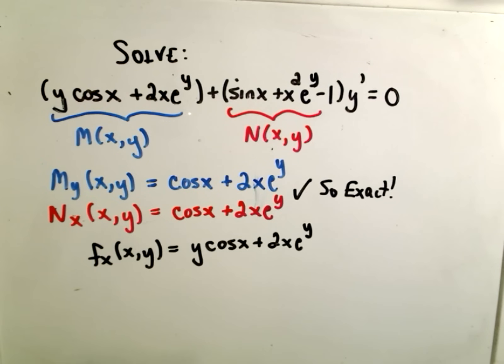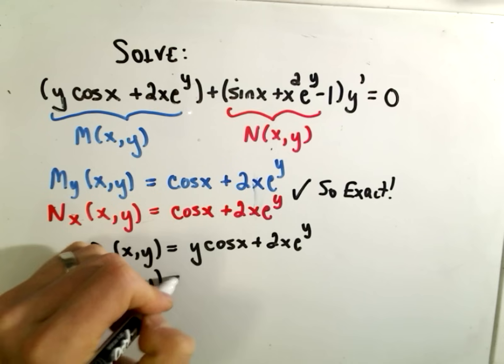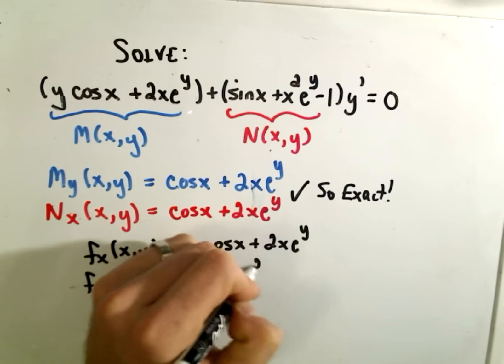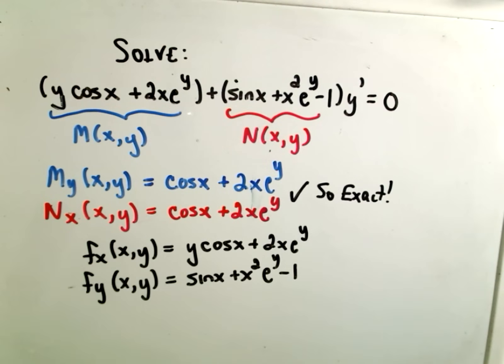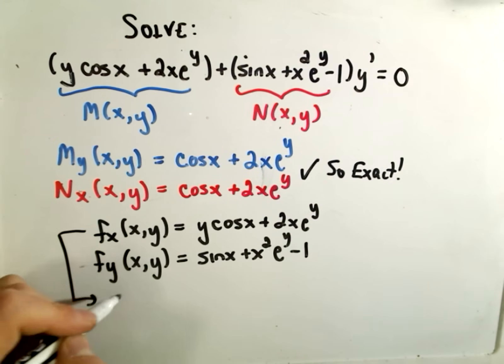Okay, well, if we, and the other thing, excuse me, we also know there's a partial with respect to y of that function that equals the other part. Sine x plus x squared e to the y minus 1. Okay,